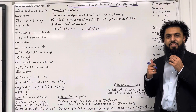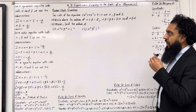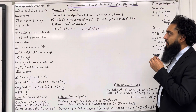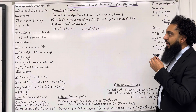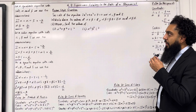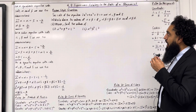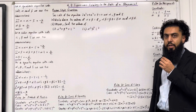Here is an exam style question. The roots of the equation 2x cubed plus 4x squared plus 7 equals 0 are alpha, beta and gamma. Part A: write down the values of alpha plus beta plus gamma, alpha beta plus beta gamma plus gamma alpha, and alpha beta gamma.